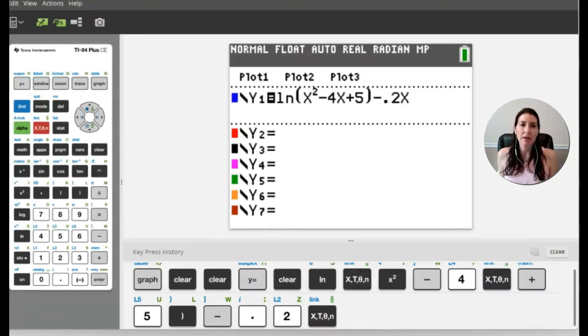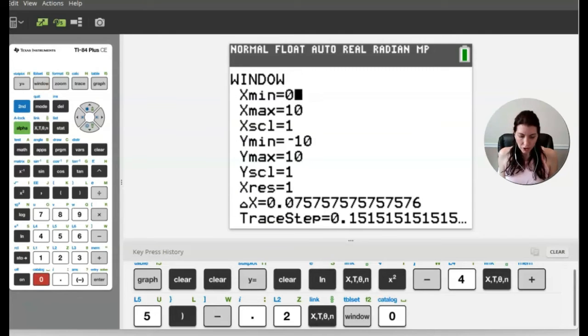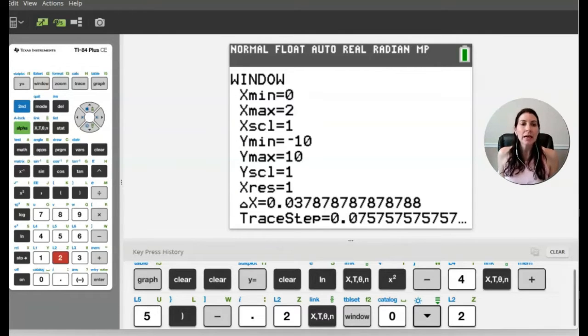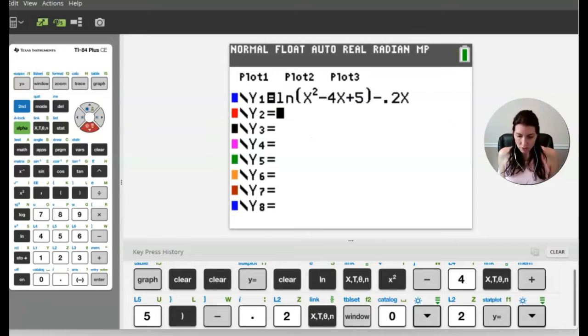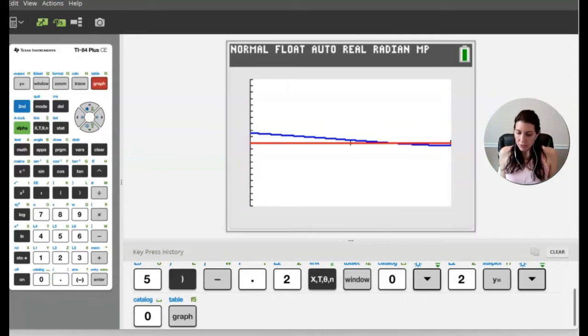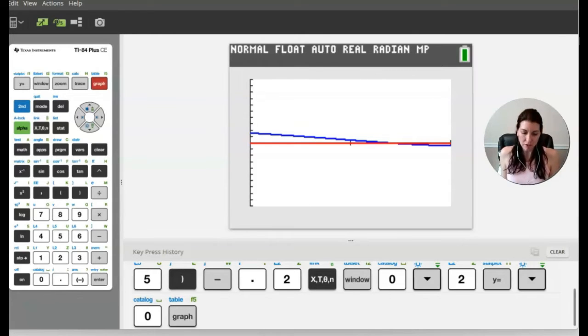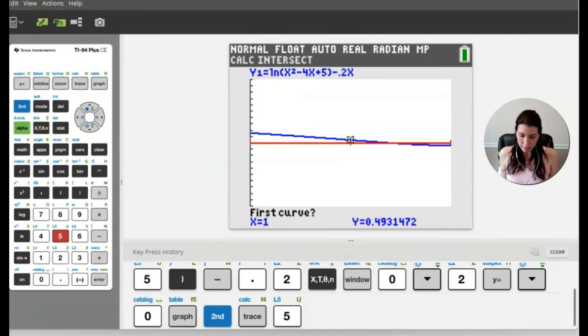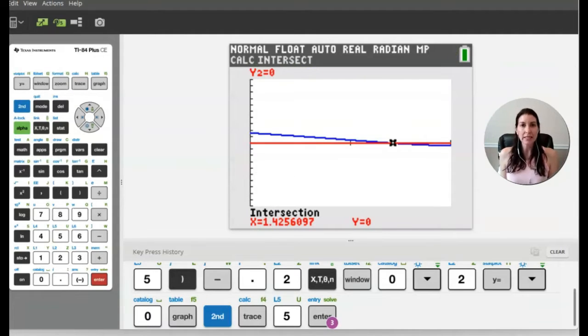So what I did is I went to the graphing calculator and I plugged in the velocity equation into Y1. And then you'll want to change your window to only go from zero to two because it says that in part A. And then also in Y2, I'm going to go ahead and put in a zero because I like to find where those intersect. So you can see that the blue equation is the velocity equation, and I want to calculate this intersection point right here to find when the particle is at rest or a velocity of zero. So let's go ahead and press intersection. And you can see that occurs at a time value of 1.425 or 1.426.